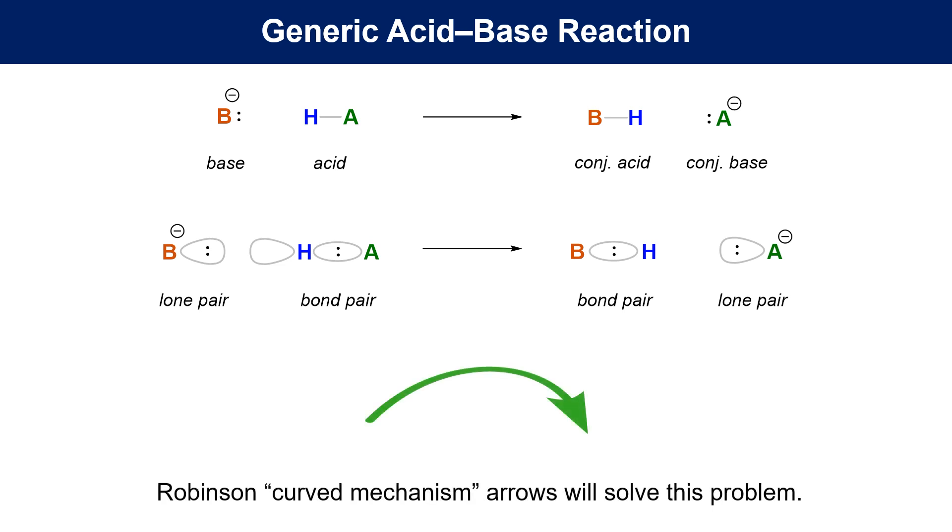Sir Robert Robinson came up with the curved arrow to describe these interactions. This is now the universal method for describing dynamic changes in organic reactions.